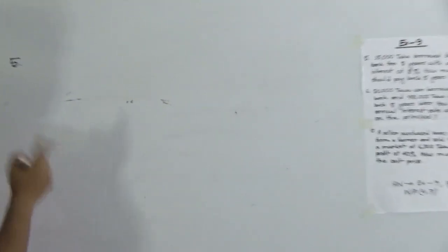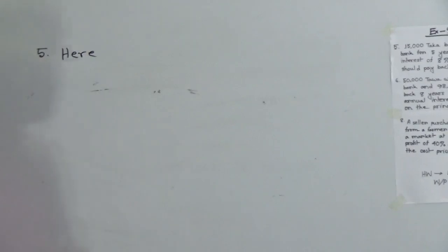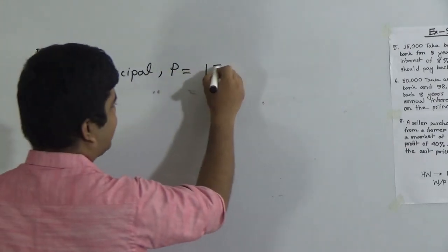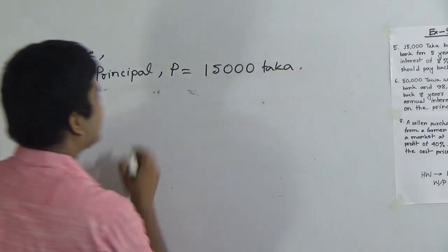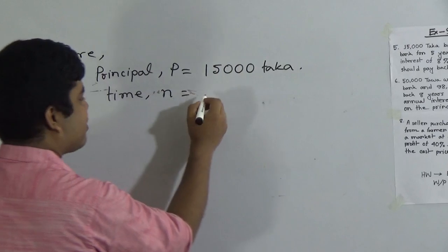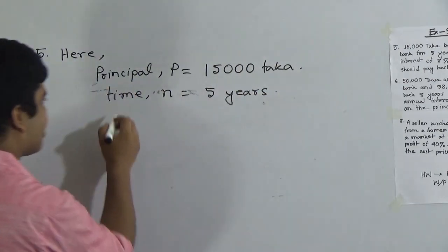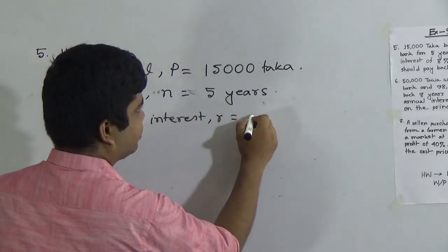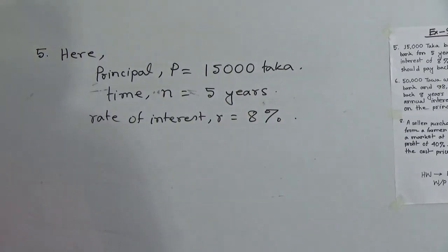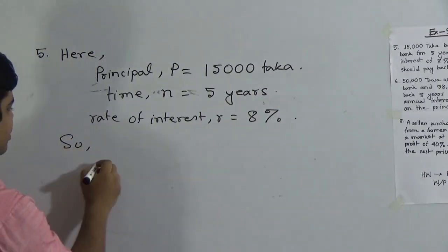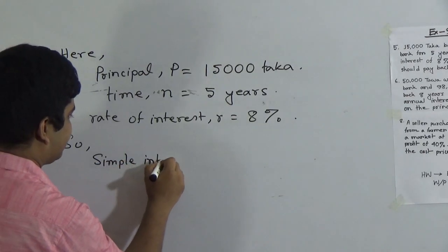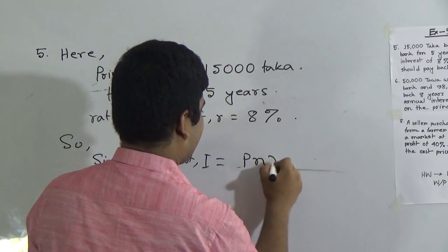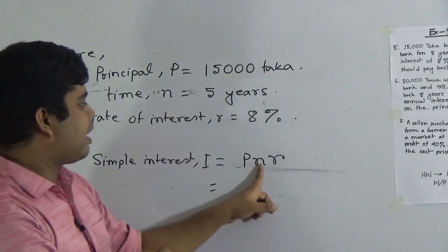Now we need to solve this. First we write 'given that': principal P equals 15,000 taka; time N equals 5 years; rate of interest R equals 8%. Now we need to find out the simple interest. So, simple interest I equals PNR. Now we put the values of P, N, and R: I equals 15,000 multiplied by 5, multiplied by 8%.